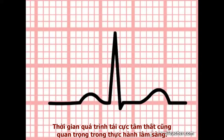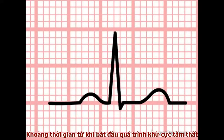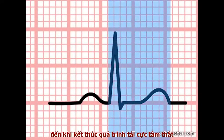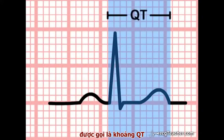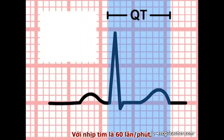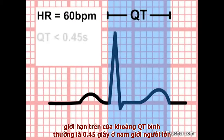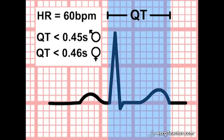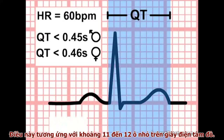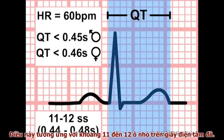The duration of ventricular repolarization is also important in clinical practice. The time between the onset of ventricular depolarization and the end of ventricular repolarization — that is, the beginning of the QRS complex and the end of the T wave on the ECG — is termed the QT interval. When the heart rate is 60 beats per minute, the QT interval should be less than 0.45 seconds in an adult male, with a slightly higher upper limit for adult females. These upper limits lie between 11 and 12 small squares on the ECG paper.